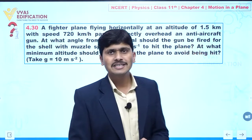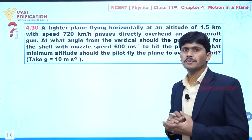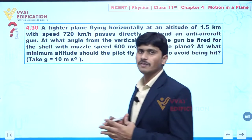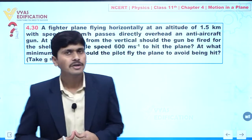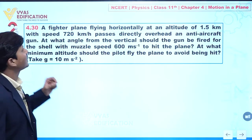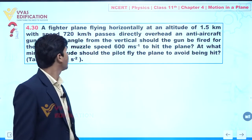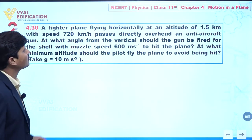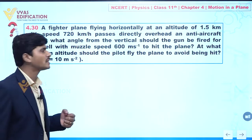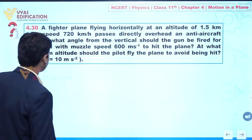Now dear students, we are going to discuss question number 4.30. Again we have a very good question. In this question, it is given to you: a fighter plane flying horizontally at an altitude of 1.5 kilometer with a speed of 720 kilometer per hour.